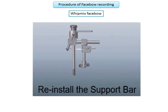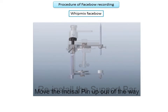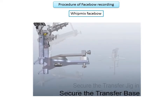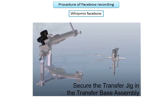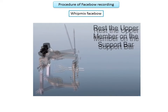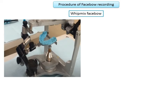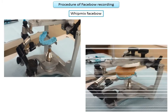Reinstall the support bar and move the incisal pin out of the way. Attach the transfer base to the articulator and secure the transfer jig in the transfer base assembly — this transfers the recording from the facebow to the articulator. Rest the upper member on the support bar. In the final setup, the bite fork with bite registration material is oriented according to the facebow recording, and accordingly the maxillary cast is oriented.